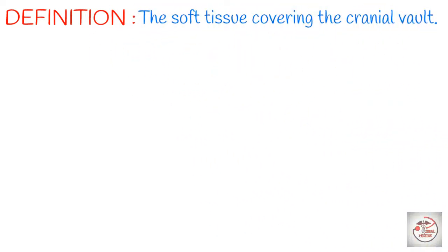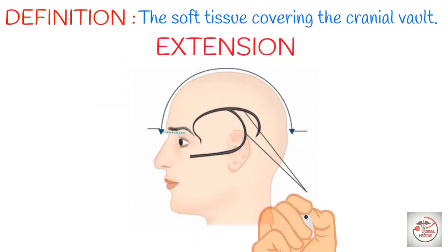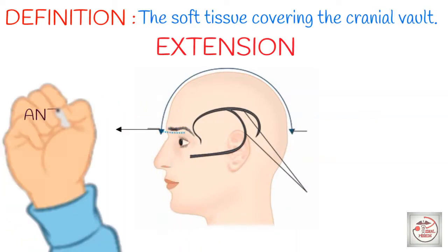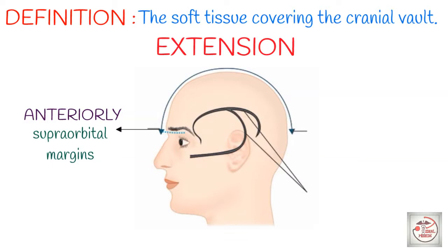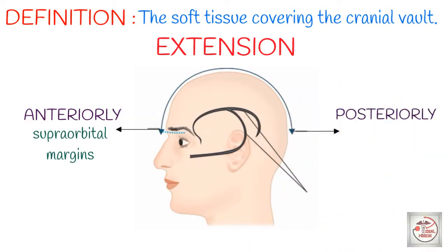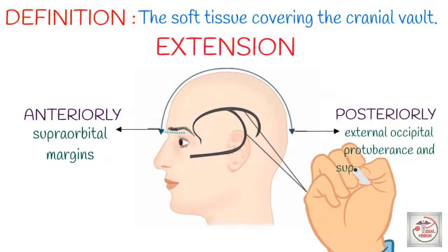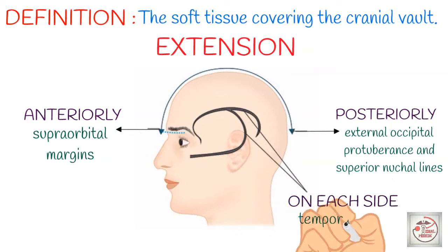Scalp is simply the soft tissue covering the cranial vault. Moving on to the extension of scalp — let's understand this with the image. Anteriorly, scalp ka extension supraorbital margin tak hota hai. Posteriorly, it extends up to the external occipital protuberance and superior nuchal lines. And laterally, it extends along the margins of temporal lines, as yahan temporal bone situated hoti hai.